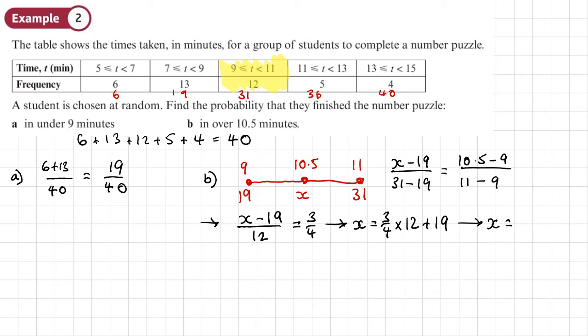Okay, so what does that tell us? That tells us that this 10.5 minutes is the 28th position. So how many positions are there above this 28th position? Well, that probability is going to be (40 minus 28) over 40, and that leaves us with 12 over 40, which we could simplify if we want to by dividing by 4: 3 over 10.